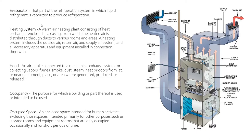Next is heating system. This is a warm air heating plant consisting of a heat exchanger enclosed in a casing from which heated air is distributed through ducts to various rooms and areas. The heating system includes the outside air, return air, supply system, and all accessories, apparatuses, and equipment installed in connection. That is just the entire heating system for any sort of heating application.